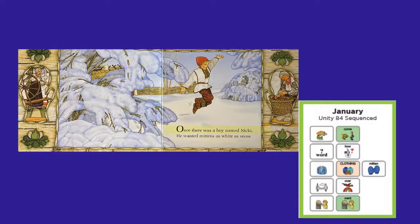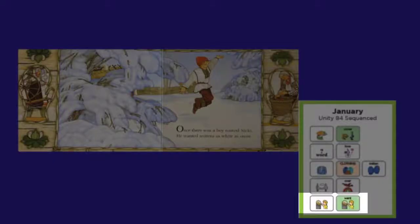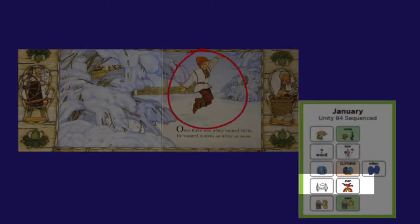Once there was a boy named Nicky. He wanted mittens as white as snow. He said, I want white mittens. And he's jumping over the snow.